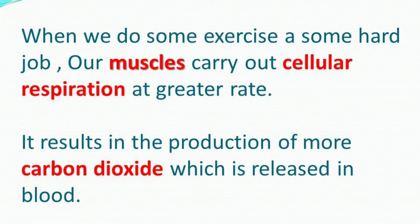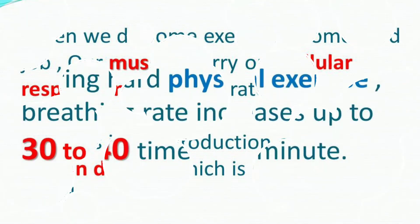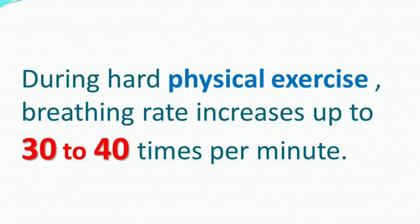Next slide में लिखा है: when we do some hard exercise or some hard job, our muscles carry out cellular respiration at a greater rate. यानि अगर हम कोई hard exercise करें — running position में चले जाएं, या कोई hard physical exercise — तो जो हमारा breathing rate है वो normal position میں 16 to 20 سے بڑھ کر hard physical exercise میں 30 to 40 times per minute بھی ہو جاتا ہے۔